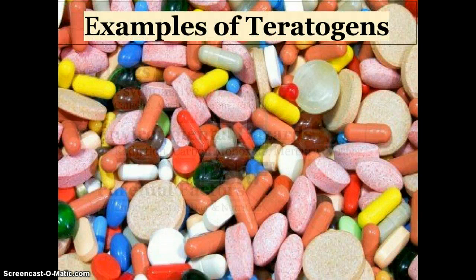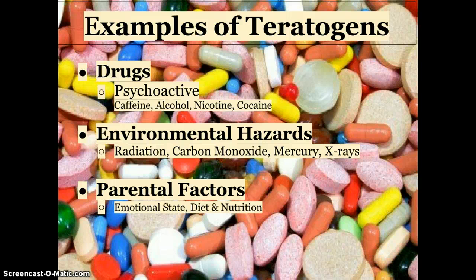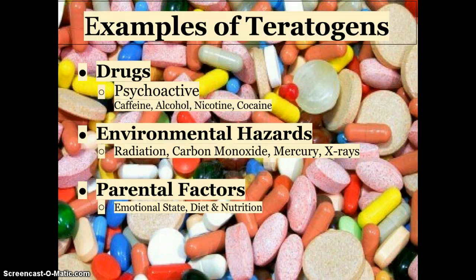On this slide, I'm going to discuss some examples of teratogens. First, we're going to talk about drugs — these can be prescription, non-prescription, or psychoactive, which includes caffeine, alcohol, nicotine, and cocaine. Environmental hazards such as radiation, carbon monoxide, mercury, and x-rays can also harm the developing embryo if the mother comes into contact with them. Lastly, parental factors acting as teratogens include things directly related to the mother — her emotional state, stress levels, and diet and nutrition all affect the developing embryo.